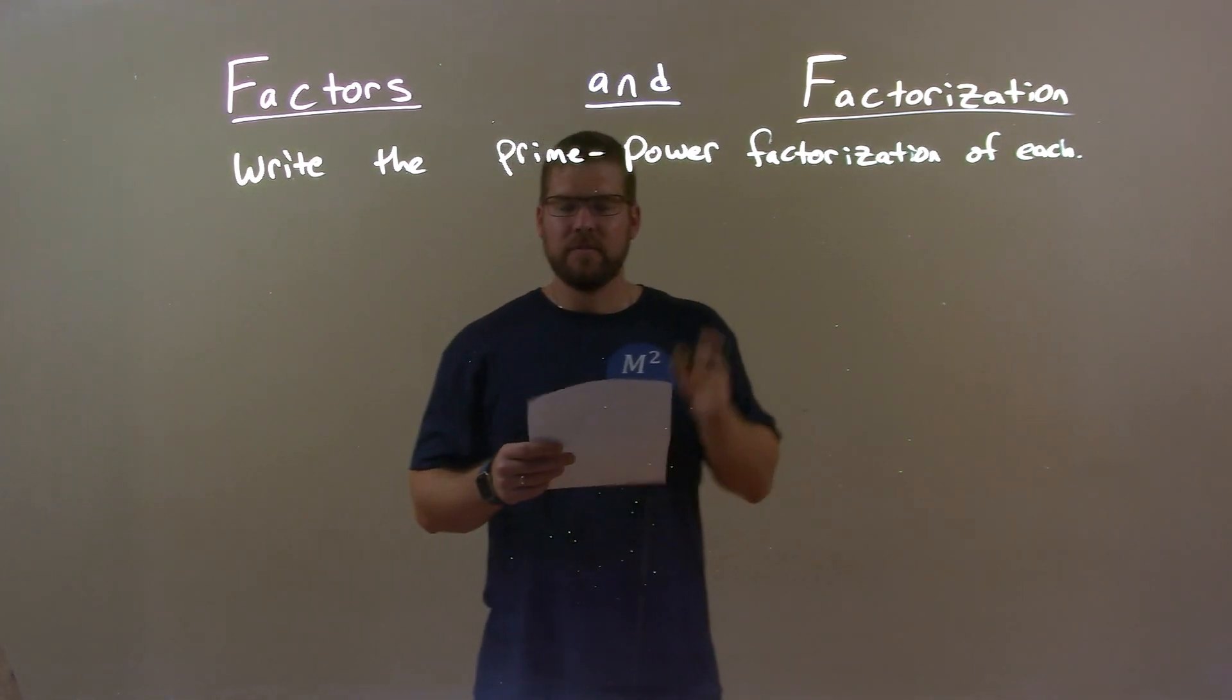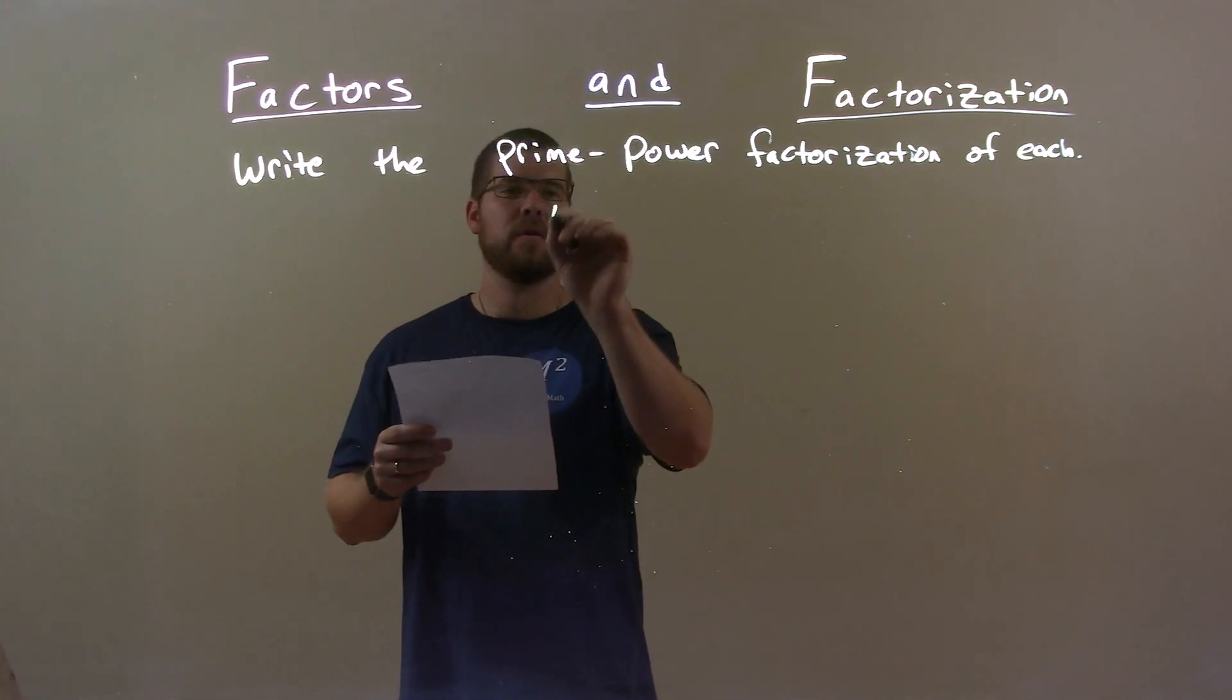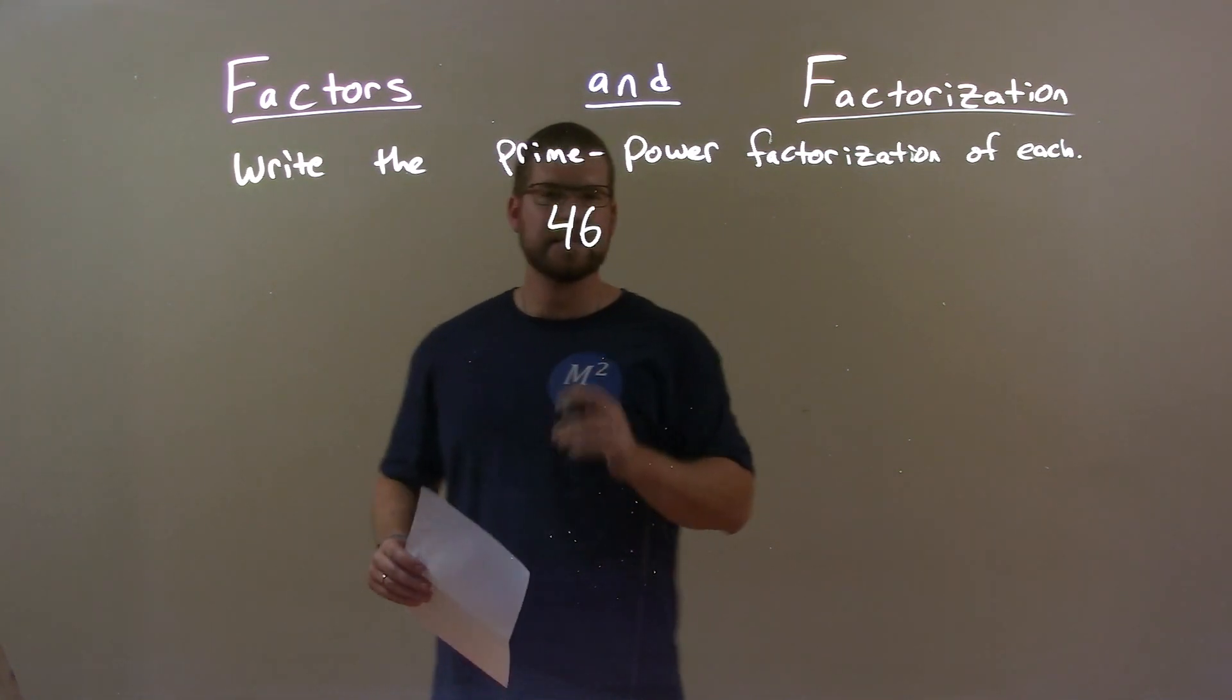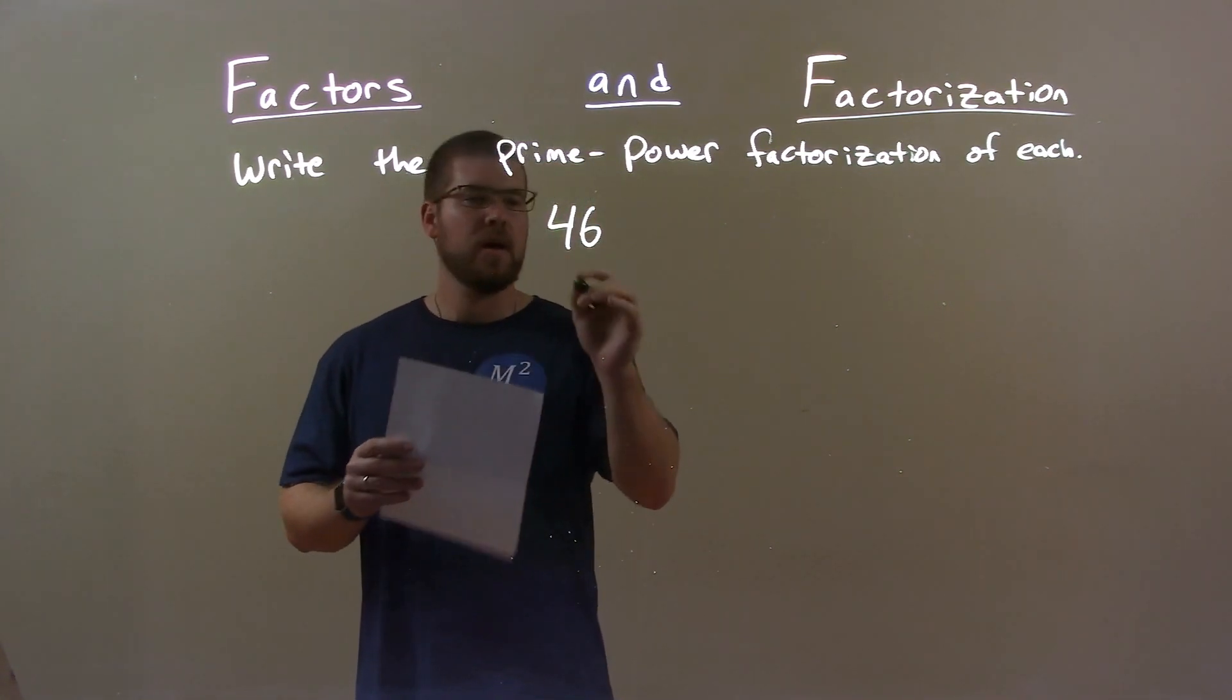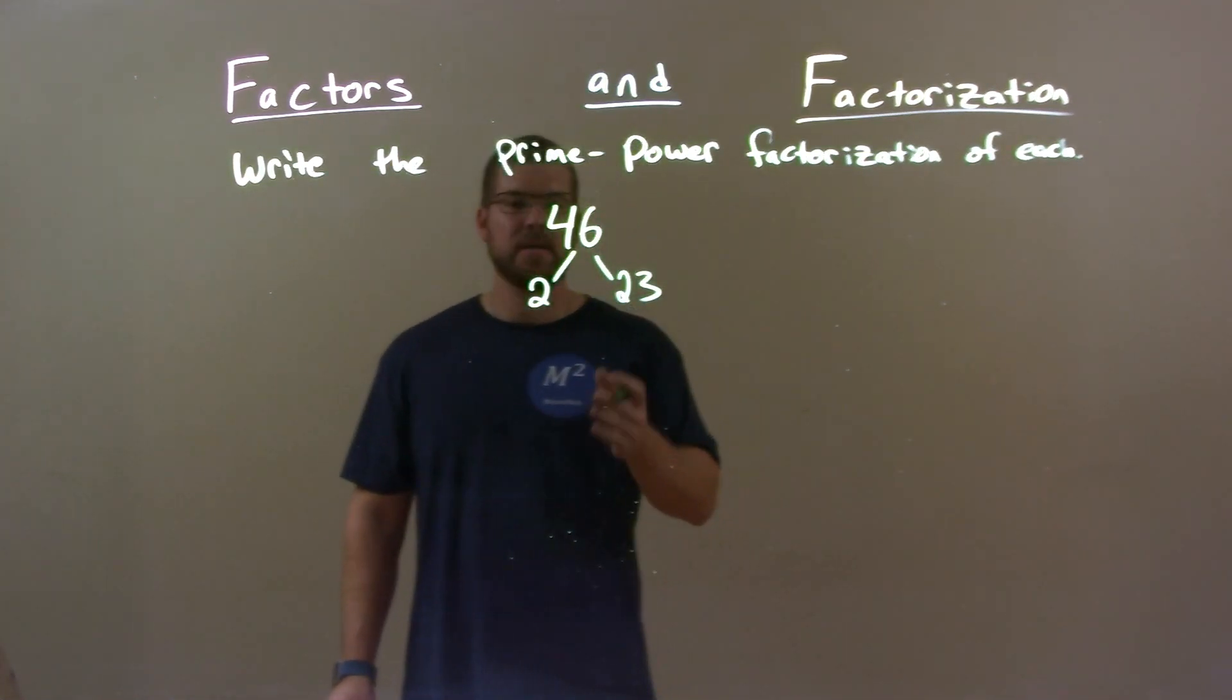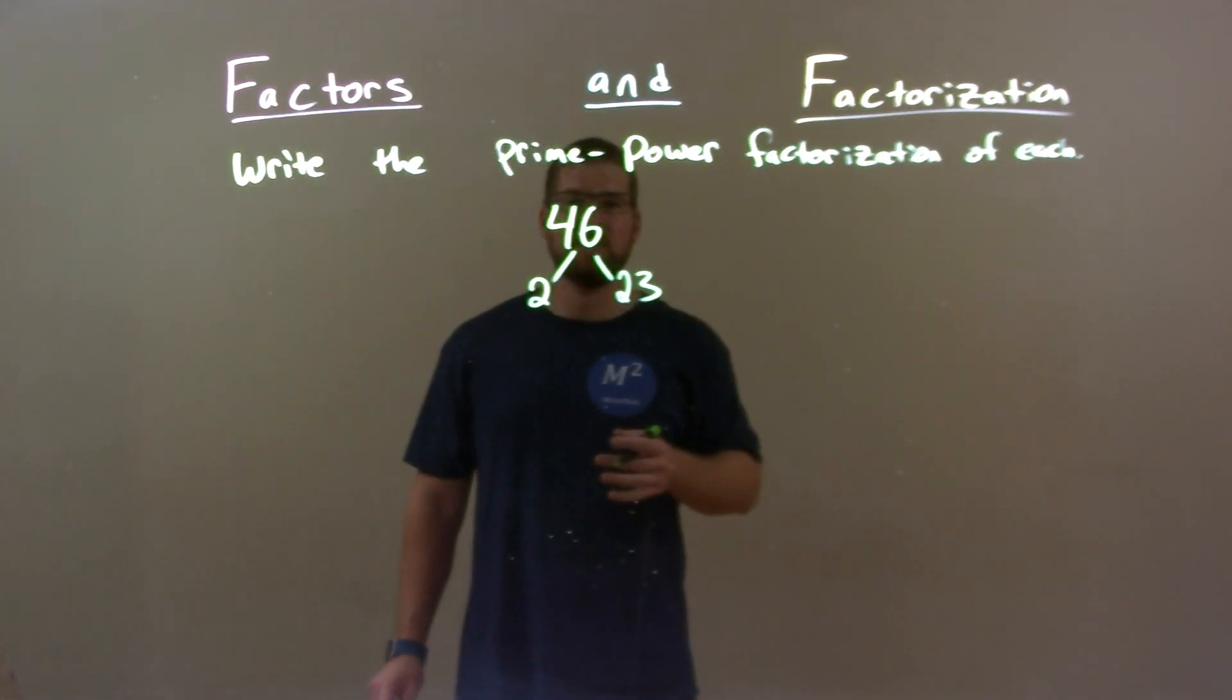If I was given this number, 46, we have the number 46 right here. Well, 46 breaks down with prime numbers. 2 goes into 46, 23 times. And after that, these are both prime numbers, so I'm done.